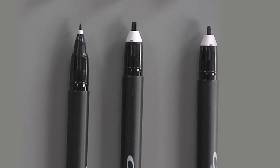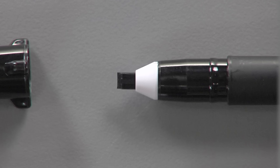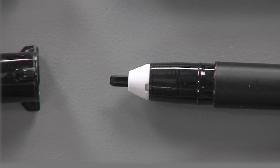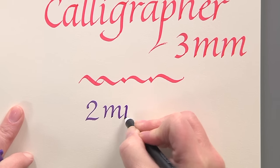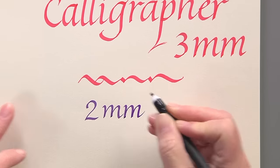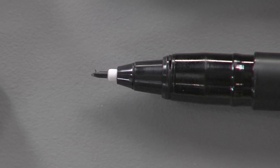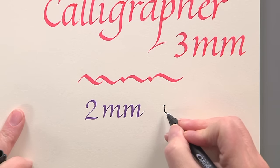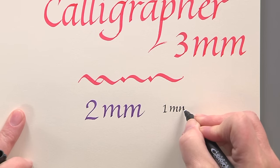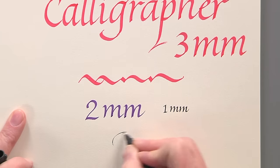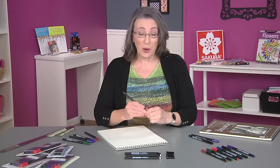They come in three sizes. I've already lettered this with the 3mm. Let me show you what the 2mm looks like in terms of size. So the 2mm gives you a nice medium-sized writing, and then the 1mm is awesome for place cards and any tiny projects. I love to flourish with it.